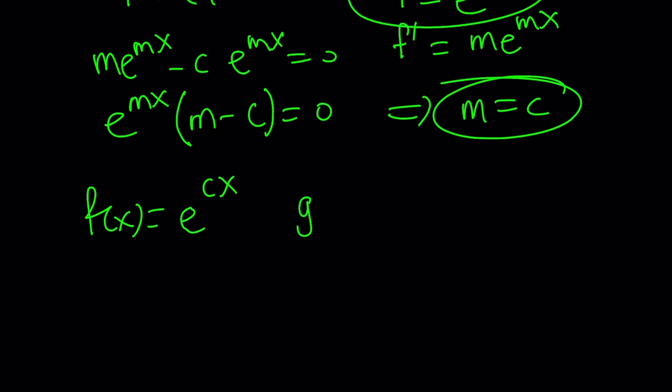By the same token, g of y can be written as e to the power, wait a minute, is it c y or another constant y? It's actually c y. You'll probably use something like e to the k y first for g. But then after differentiating, you're going to find that k is equal to c. So that gives us this. But wait a minute. Did we solve this problem? Yes, of course.